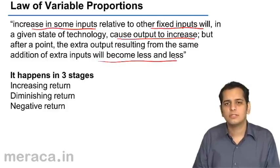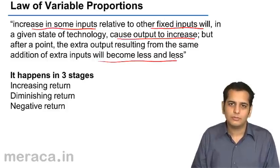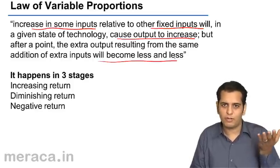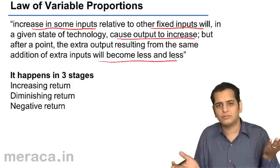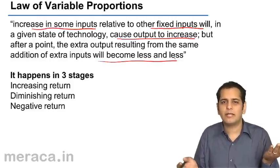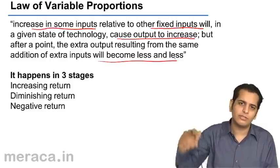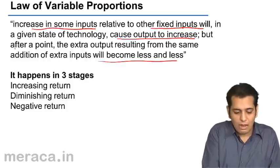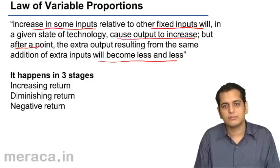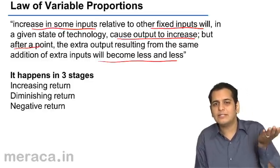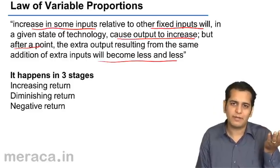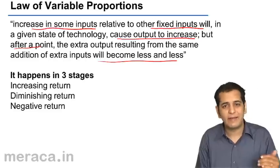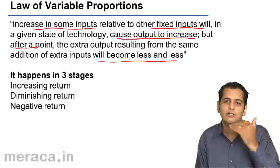When we increase the variable factor of production with other factors of production remaining constant, initially our production will go on increasing. But after a point, even if we increase the amount of variable factor, our production will increase at a diminishing rate, and finally it will go on decreasing.